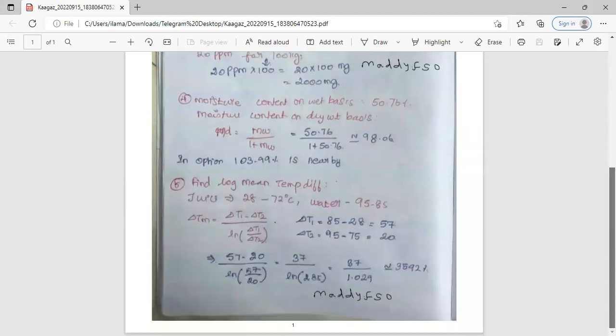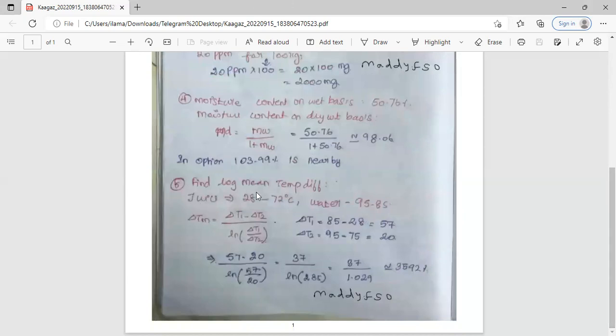For log mean temperature difference, the juice inlet temperature is 28 degrees Celsius and outlet temperature is 75 degrees Celsius. I mentioned that wrongly, marked it as 75 degrees Celsius, not 72 degrees Celsius. For water, inlet temperature is 95 degrees Celsius and outlet temperature is 50 degrees Celsius. This formula is the basic formula we have to know: del Tm equals del T1 minus del T2 divided by ln of del T1 divided by del T2.